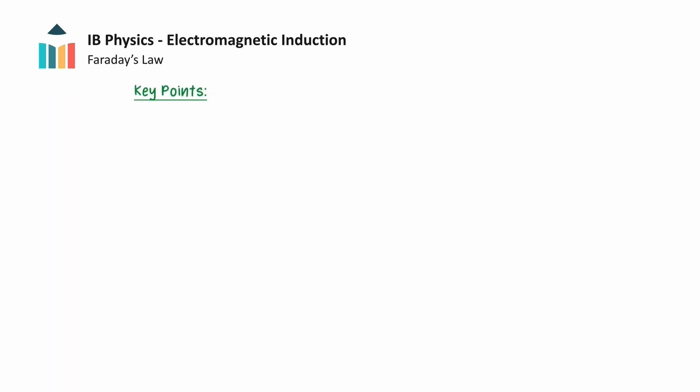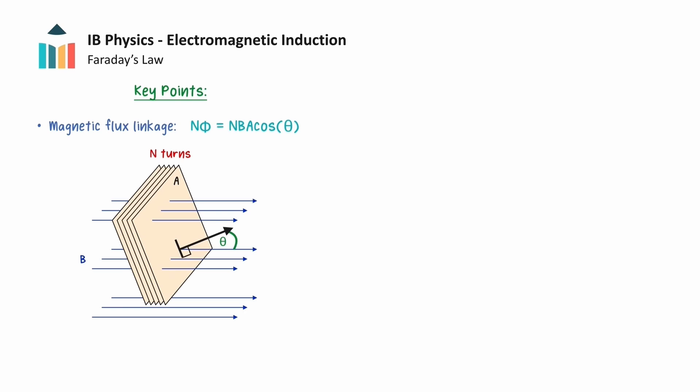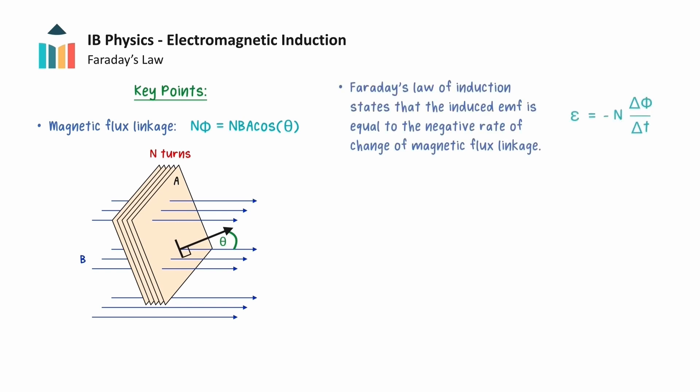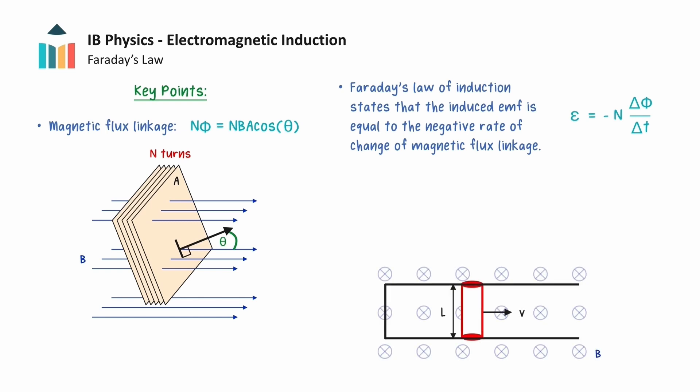We will now provide a final summary of the key understandings from this video. We define the magnetic flux linkage as a quantity for the magnetic flux through a coil with n turns. This quantity is used in Faraday's law of induction, which is used to calculate the induced EMF from the negative rate of change of magnetic flux linkage with time.